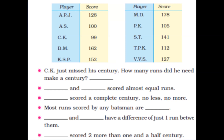Dash scored 2 more runs than 1 and a half century. Now we will have to think about it. 1 century has 100 runs and a half century has 50 runs, so 1 and a half century equals 100 plus 50, which is 150. We have to look for a player who has scored 2 more runs than 150. That player is KSP, who has scored 152 runs.